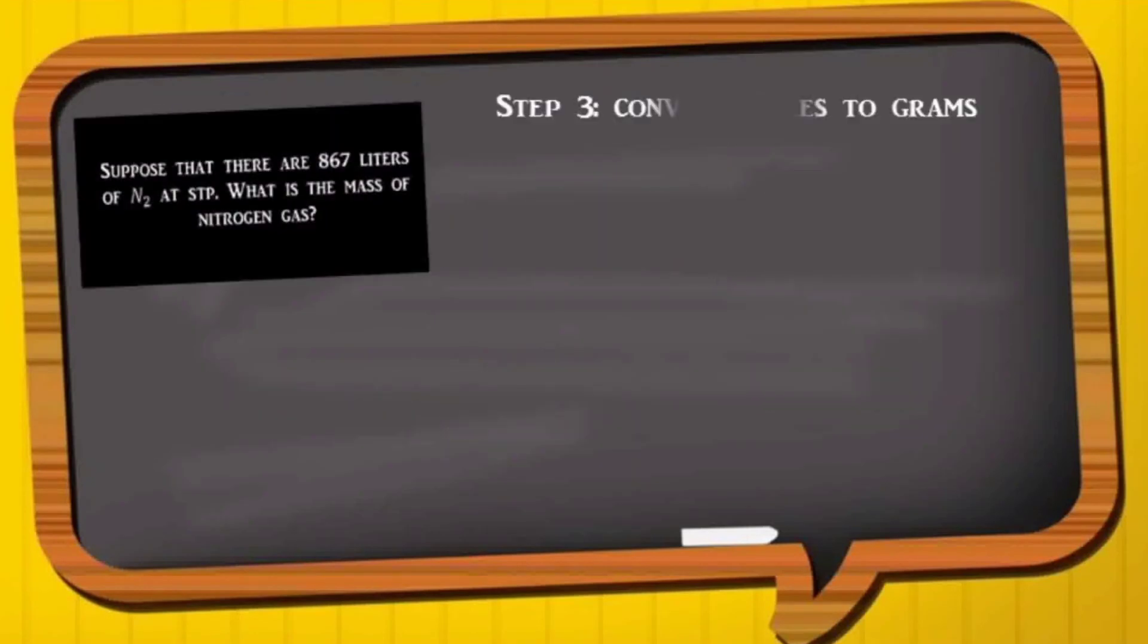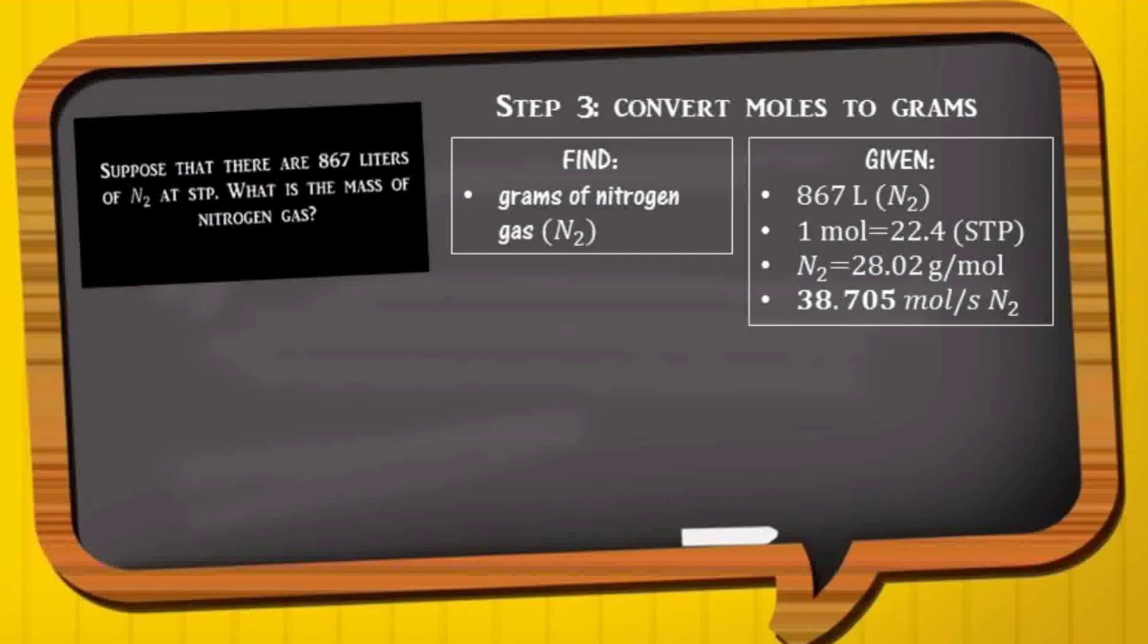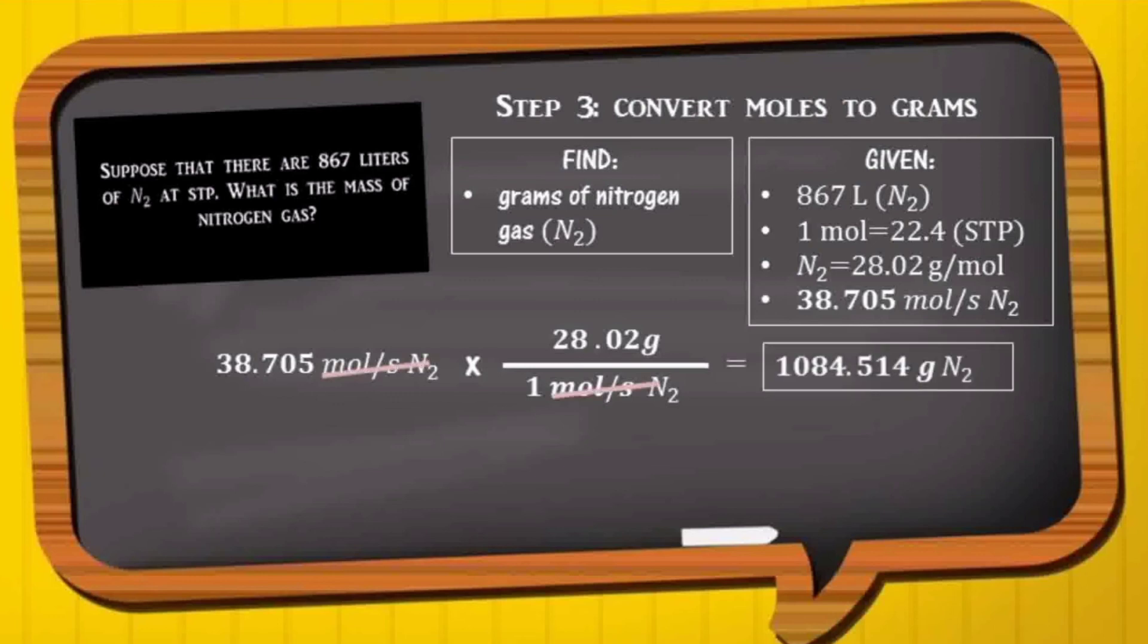We also know that the molecular weight of nitrogen gas equals 28.02 grams per mole. So we then calculate the weight of nitrogen gas in 867 liters. So 38.705 moles times 28.02 grams per mole divided by 1 equals 1084.514 grams.